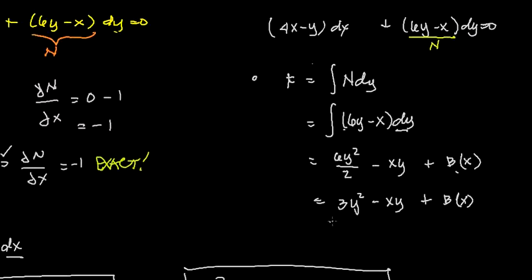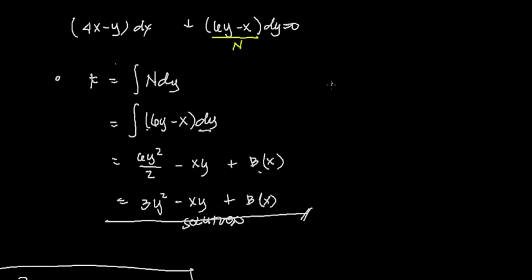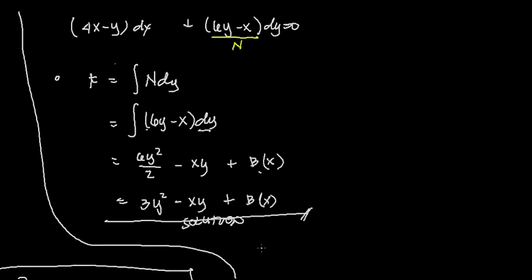So actually this will be our solution, but we need to find the value of our b(x). So the next step is, since we integrated this, we need the partial derivative of this f with respect to x. So we need to take the partial derivative with respect to x.